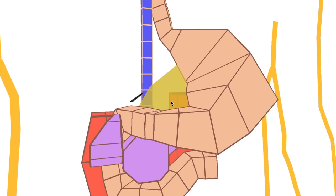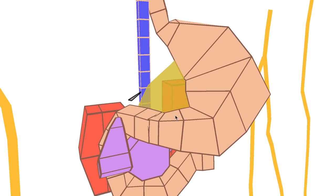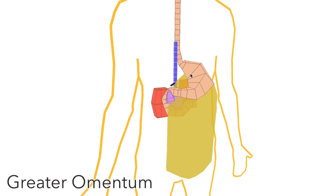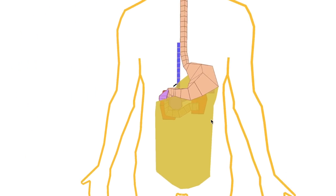So the lesser omentum, as you can see, connects to the lesser curvature of the stomach. And from the greater curvature comes the greater omentum, which folds down and covers the whole abdomen like an apron.